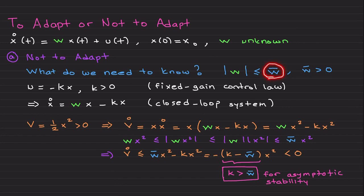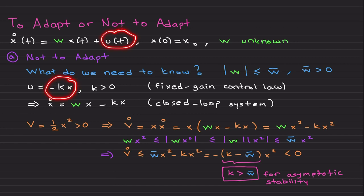Since w is unknown, we need to know its upper bound, which is a positive constant. When you apply this fixed gain control law to the uncertain system, you end up with the closed loop system — I just inserted -kx into the plant. To analyze this system I'll use Lyapunov stability. I consider this positive definite Lyapunov function candidate and take its derivative, which is x·ẋ, and insert ẋ.